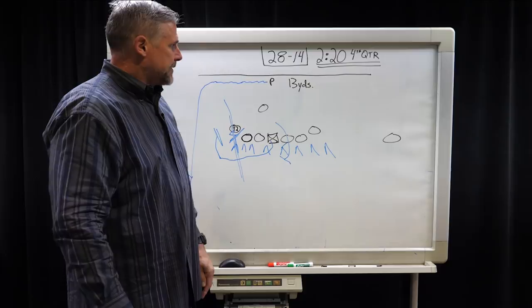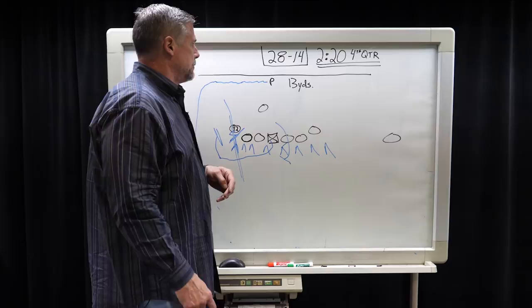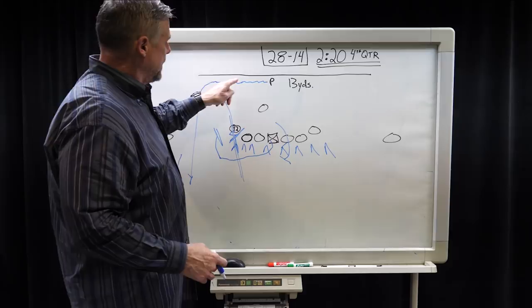Same thing with a defensive back, dropping back and jumping a route. Gets an interception, and it's a risk a little bit. But he encourages his players to make plays. And if you see something, go be a football player. And that's exactly what Michael Dixon did there.